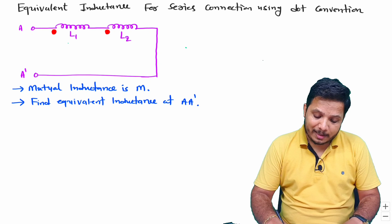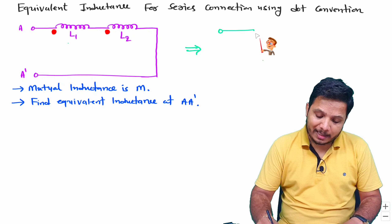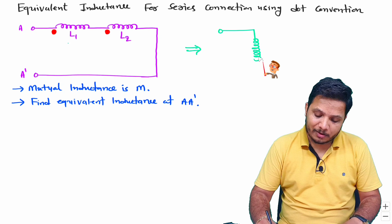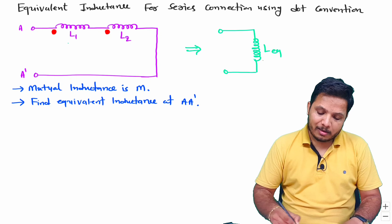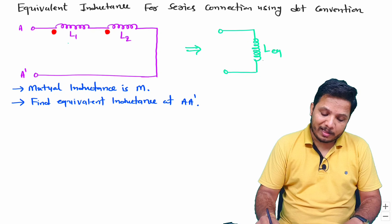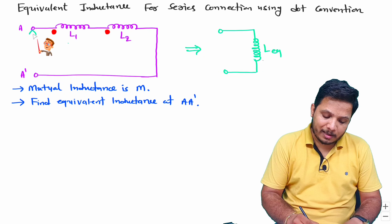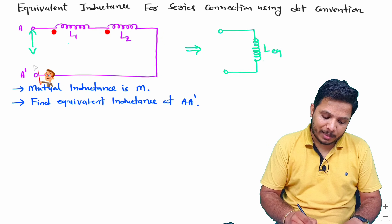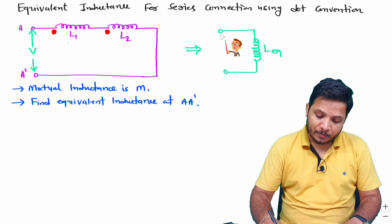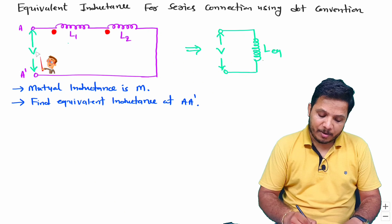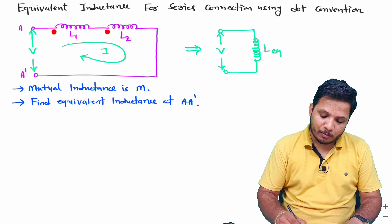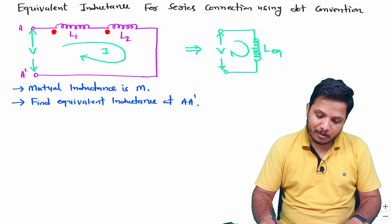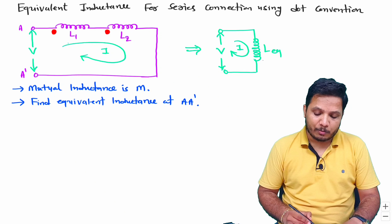Let us say we have equivalent inductance L equivalent. To calculate L equivalent, I will connect a supply V here. Because of this supply V, current I will pass in this loop, and here also current I will pass in the loop.